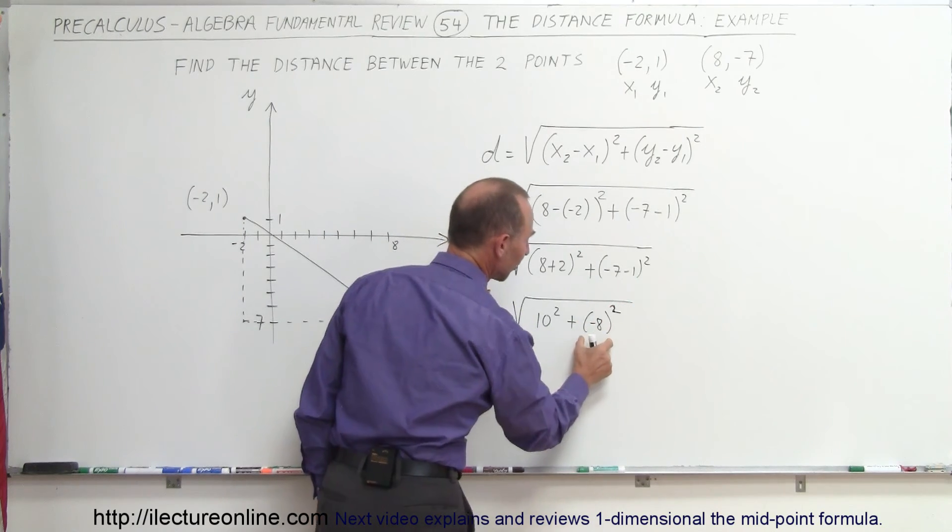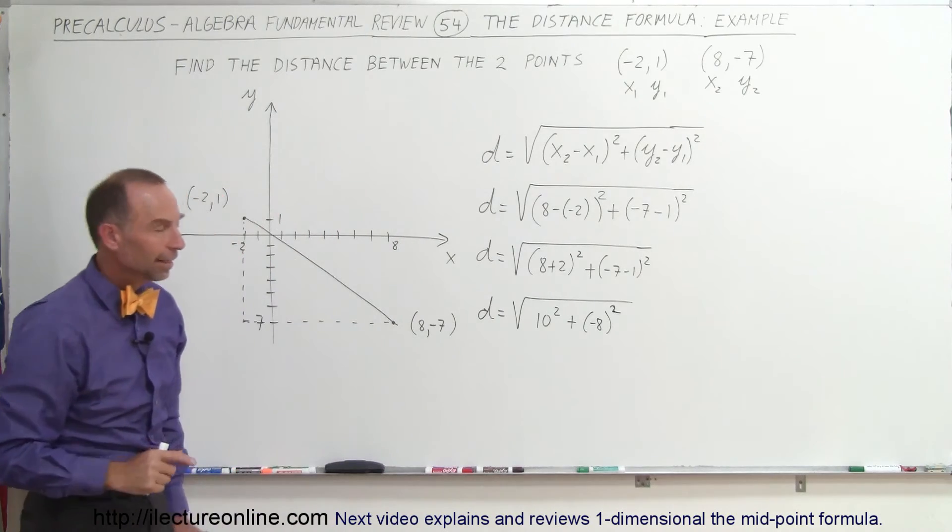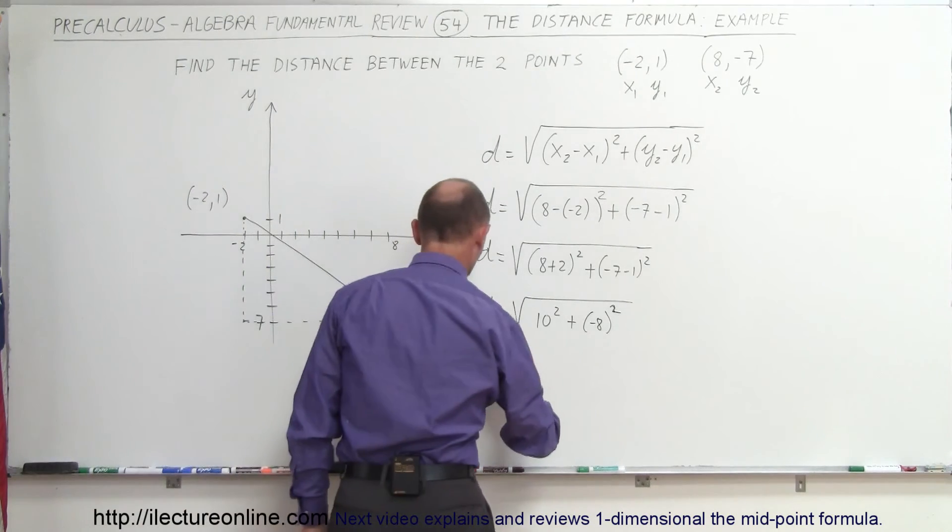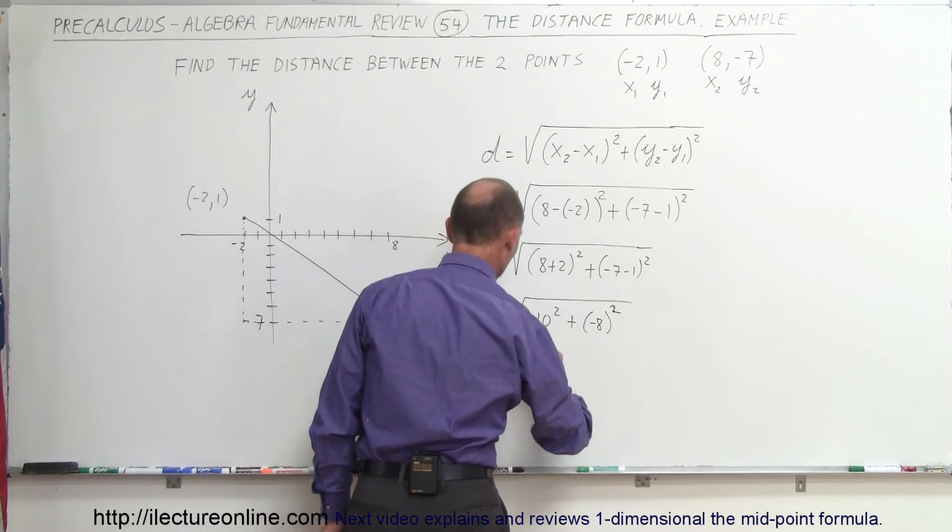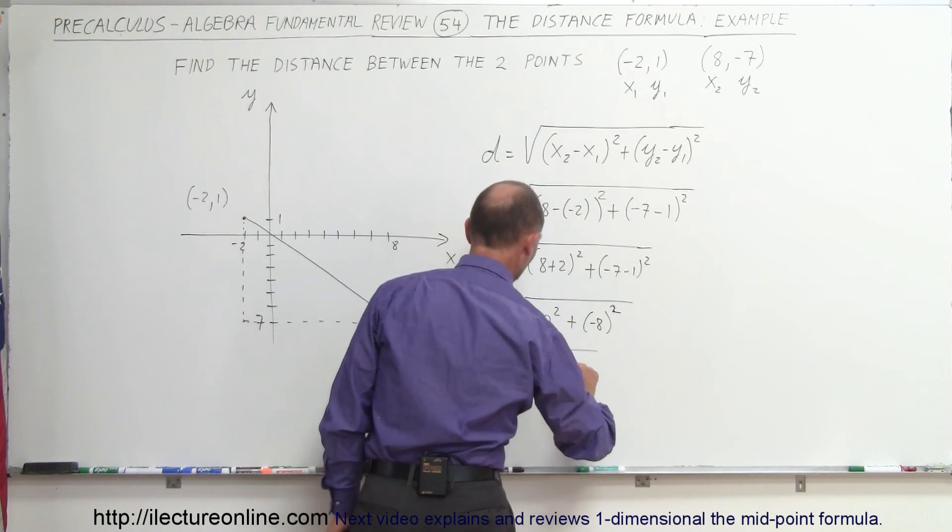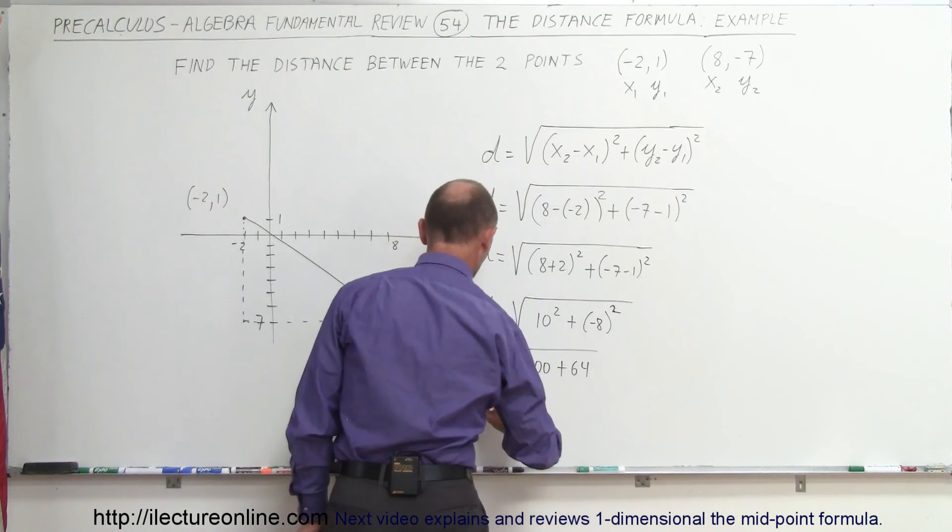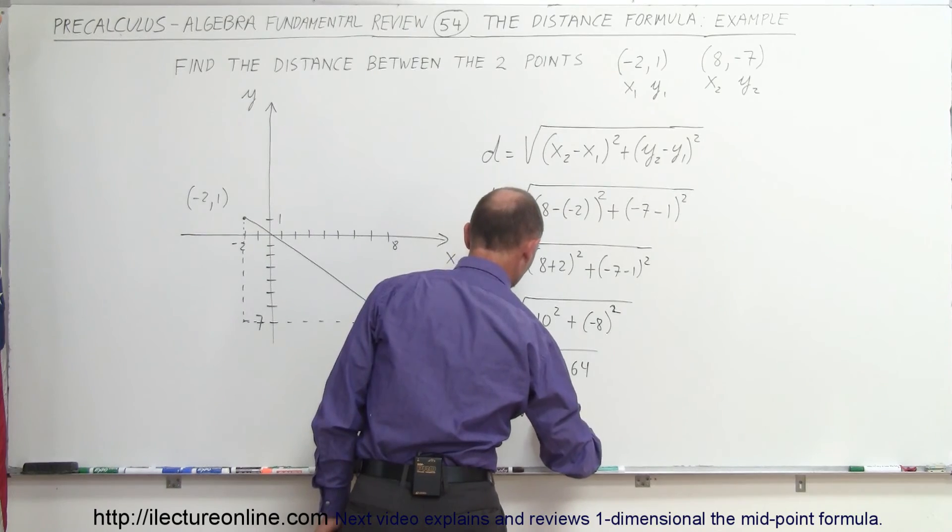Now we square both of those. We have distance equals the square root of 100 plus 64. So distance is equal to the square root of 164.